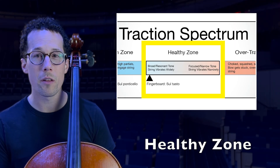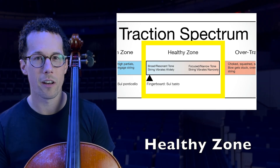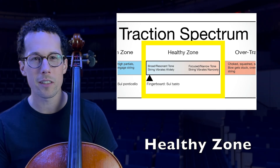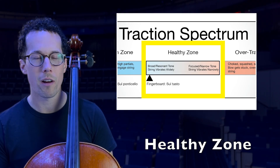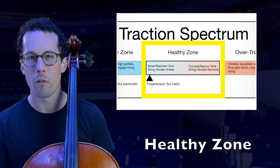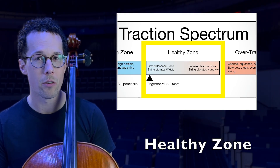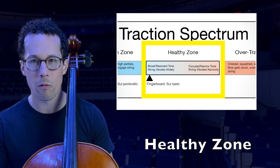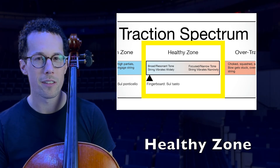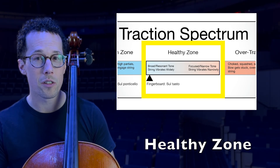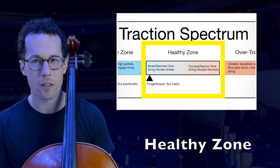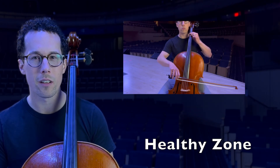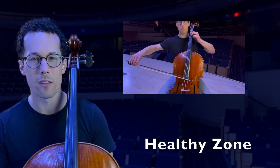On the traction spectrum, the zone in the middle produces the rich resonant sound we recognize as a healthy tone. To be in the zone, the stick and the slip must stay in balance — traction can't be too little or too much. Within the healthy zone, there are a wide range of tone colors. If you favor higher traction using slower bow speed and greater weight, it generally creates more focus and density in the sound. Favoring faster speeds and less weight lessens traction and produces more resonance and transparency in the color. Saltasto is a color produced at this end of the healthy zone.